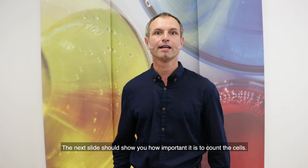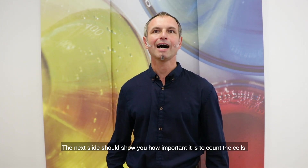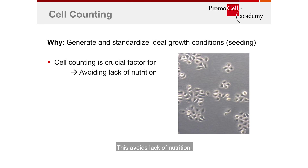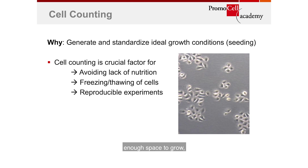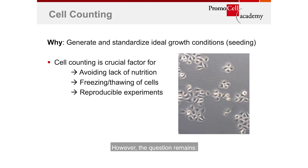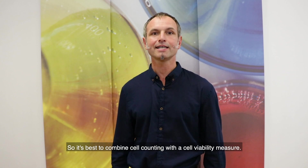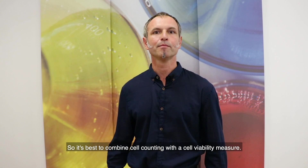The next slide shows how important it is to count cells. This is important because you provide ideal growth conditions and standardize your experiment — avoiding lack of nutrition, ensuring enough space to grow, and forming the basis of reproducible experimentation. However, the question remains whether the cells being counted are dead or alive, so it is best to combine cell counting with a cell viability measure.